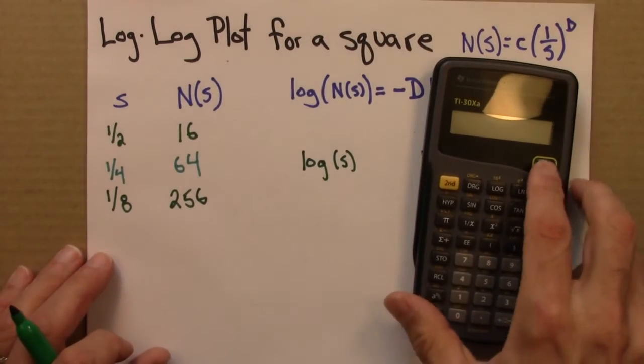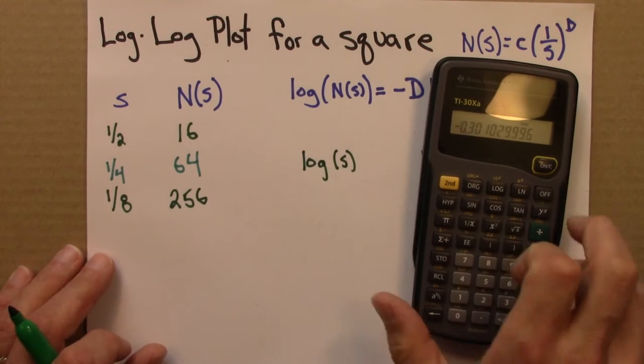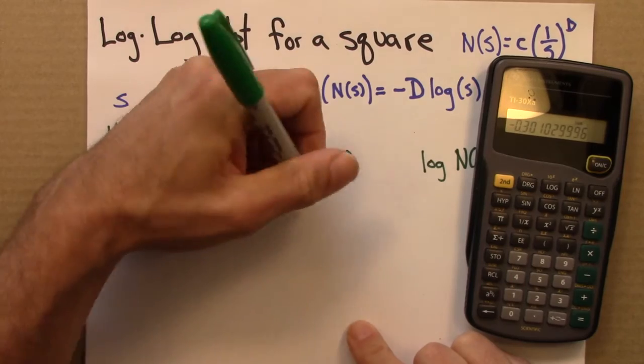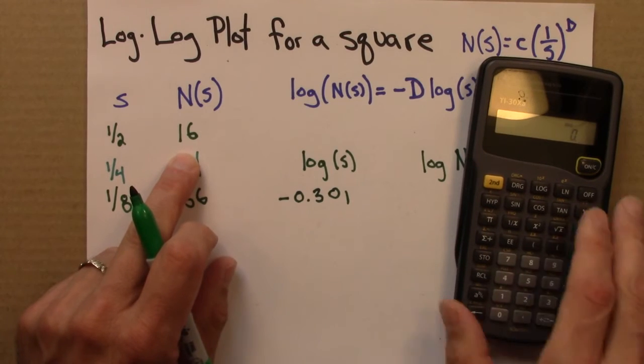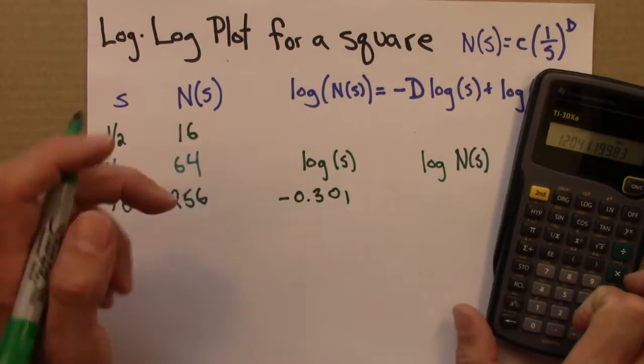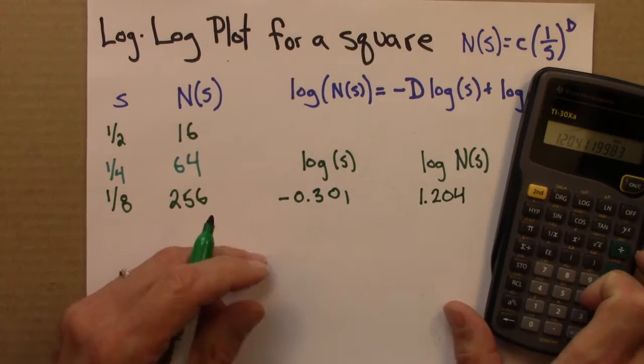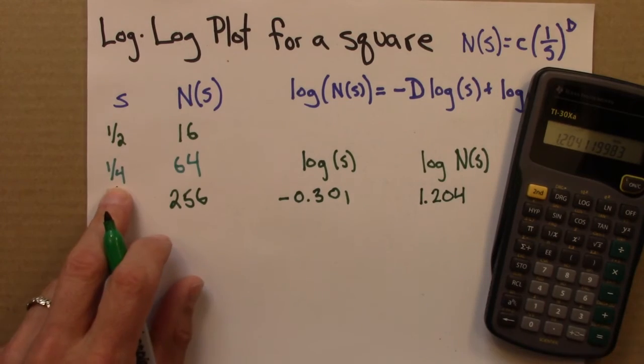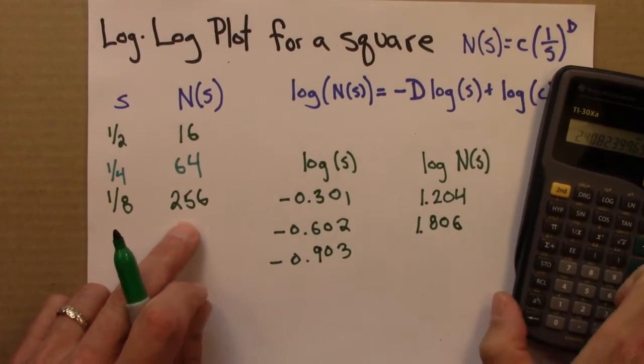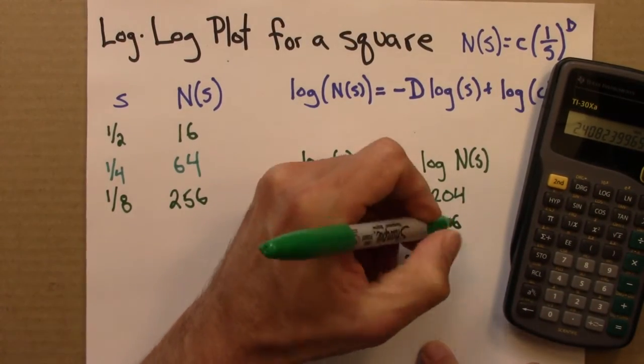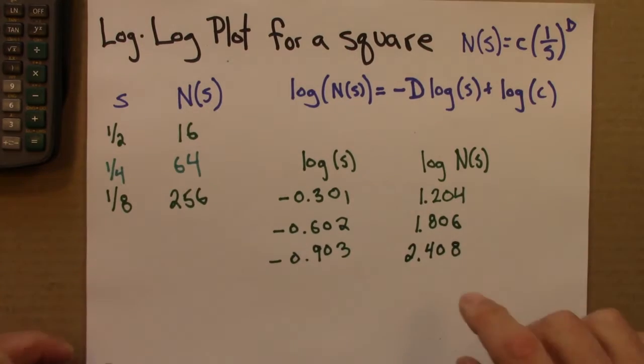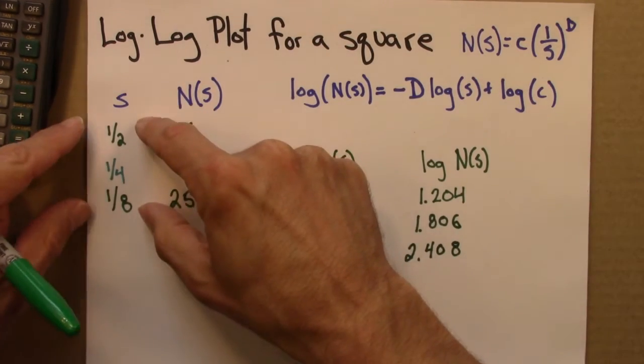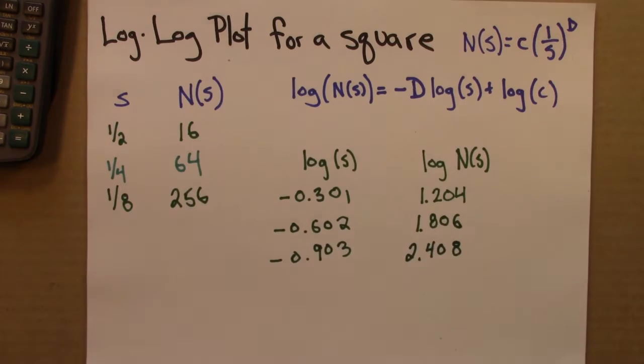So I'm going to have log s and log n of s. So log of a half, 0.5 log, is going to be minus 0.301. Then I'm going to take the log of n. So 16 log is 1.204. Let's keep going. The log of a quarter. Lastly, the log of 256 is 2.408. To get these numbers, I just took the log of those numbers.